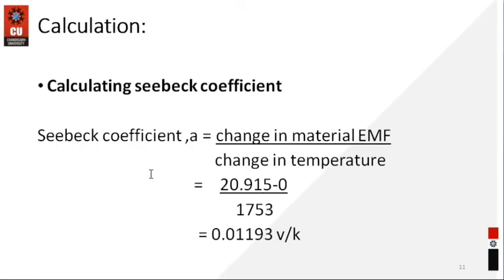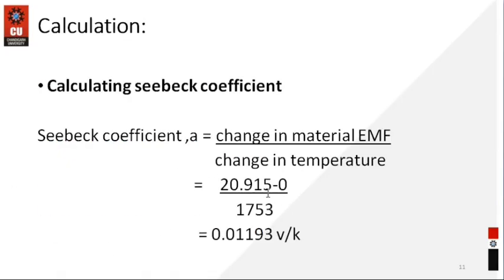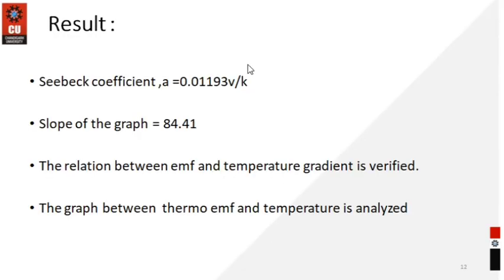After finding the slope of the graph you can find the calculating part of the Seebeck coefficient. Here is already given the formula: change in material EMF divided by change in temperature. The EMF change is from the final point minus the initial point. The change in temperature is 1753 kelvin. When you solve this equation you get the Seebeck coefficient: 0.01193 volt per kelvin. This is the unit of the Seebeck coefficient.